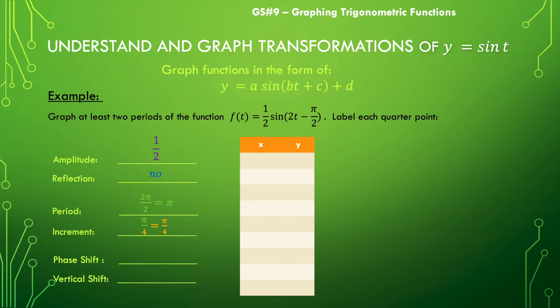Then we can find our phase shift by taking the negative version of this c value and dividing it by b. So negative negative pi over 2, all divided by 2 — that's positive pi over 2 divided by 2, which is pi over 4. And this graph does not have any kind of vertical shift, so we're still at zero.